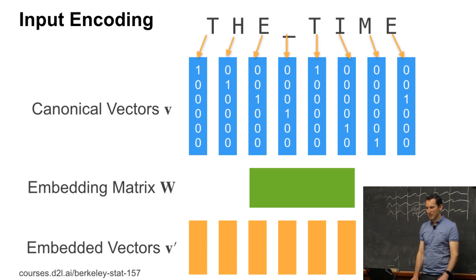So, you basically have some input like the time machine and every character here goes into its canonical vector. Then you have some embedding matrix maybe and then you get some embedded vectors. And for individual characters that's not such a big deal, but once you have words or longer substring sequences you would probably care.